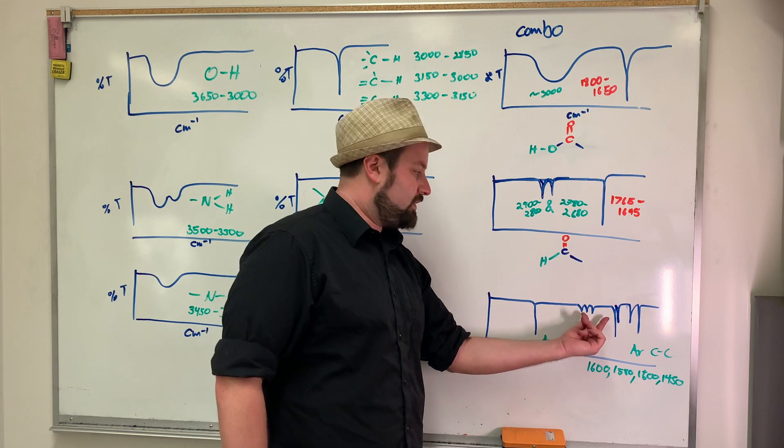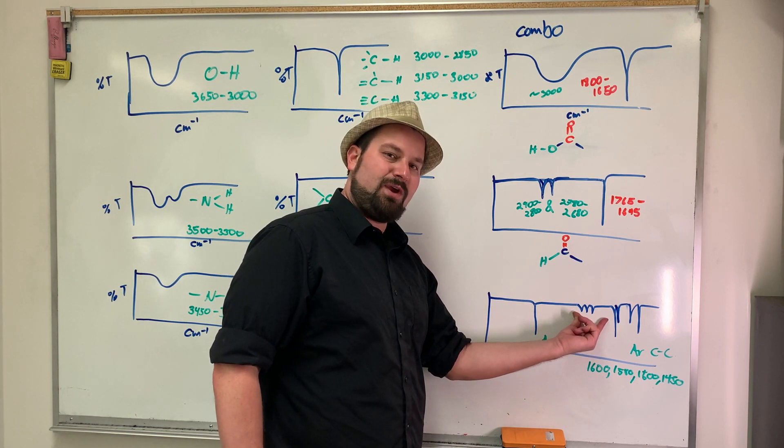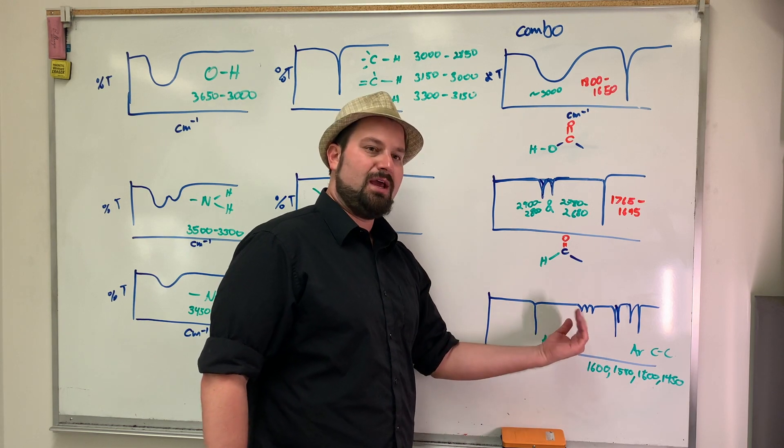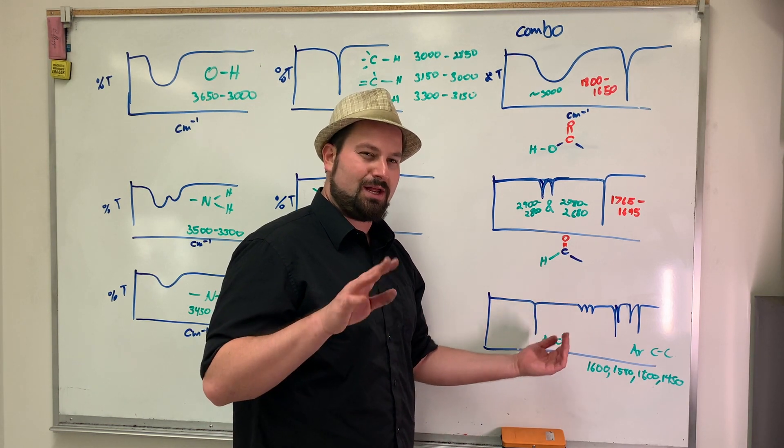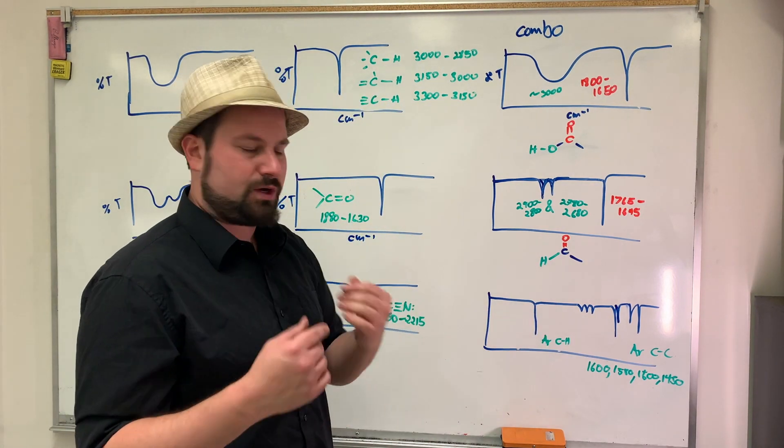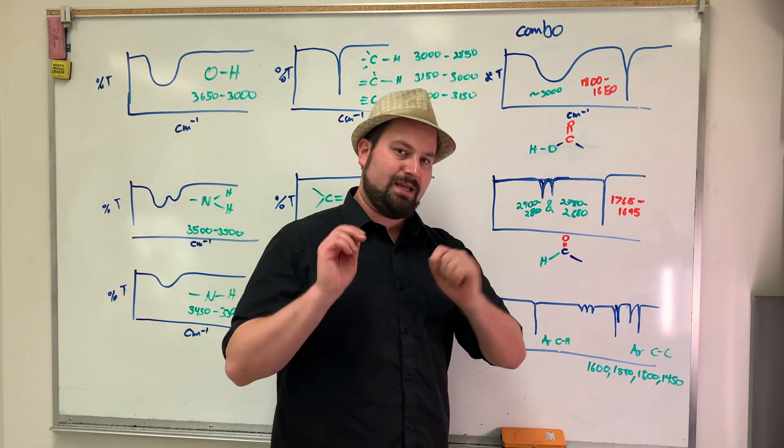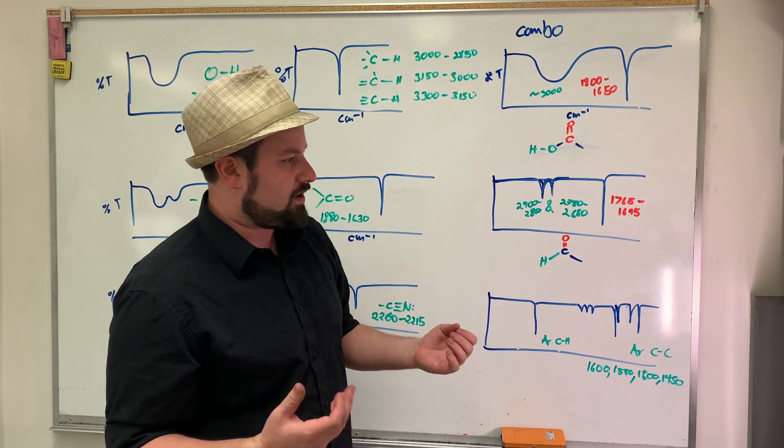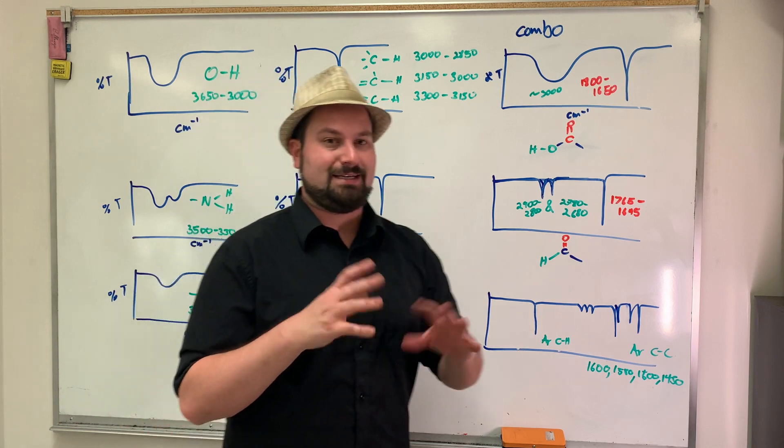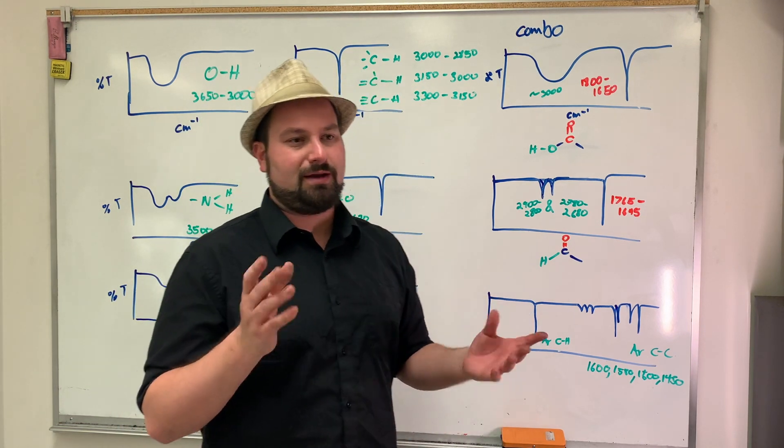A lot of times with aromatic, you will also see these three or four guys, which are tiny, tiny, tiny, those above usually, those in the low 2000s, you might see those as well. Those are usually a good indication as well. If you have all of these, that you have an aromatic compound, usually specifically a C6 aromatic compound, like a benzene ring.